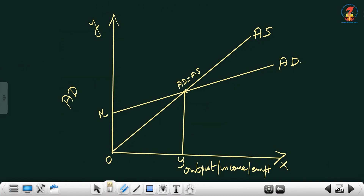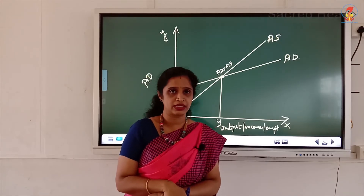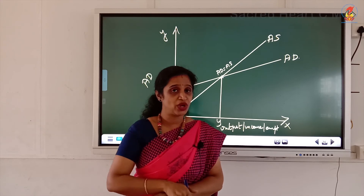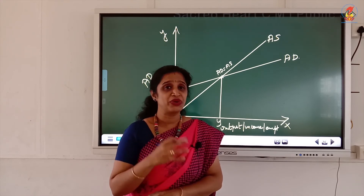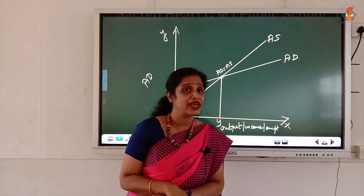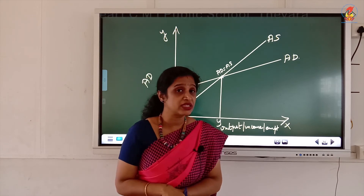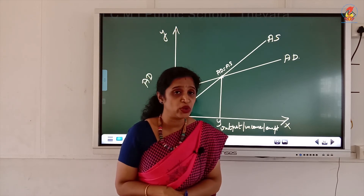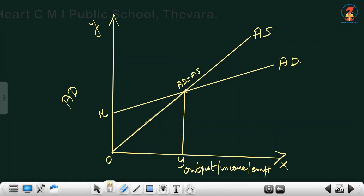The same can be represented with a diagram. When drawing the AD and AS curves, the aggregate supply curve always starts from the origin — it is a 45-degree line starting at zero. The aggregate demand curve starts from the y-axis due to the presence of autonomous consumption.